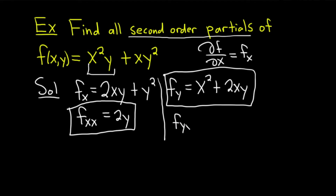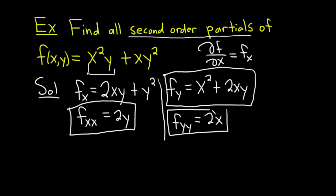Now let's find fyy — the second-order partial with respect to y. Differentiating x², we get 0 because it's a constant. Differentiating 2xy with respect to y, the derivative of y is 1, so we're left with 2x. Therefore fyy = 2x.